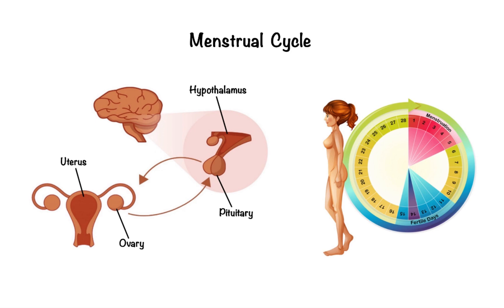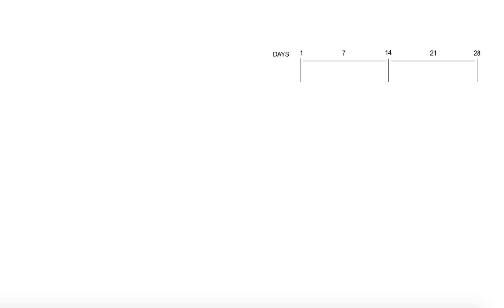According to convention, the cycle is divided into two phases of approximately 14 days each. The first half of the cycle is called the follicular phase. At the beginning of this phase, the hypothalamus sets the beat for the menstrual cycle by the pulsatile release of gonadotropin releasing hormone, GnRH for short.